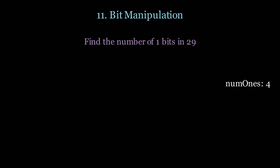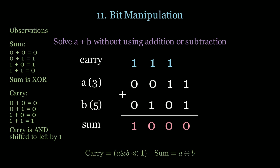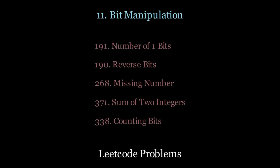For adding A plus B without addition or subtraction, start with the least significant bits: 1+1 is 10 in binary — put 0 for sum and carry 1. Key observations: the carry is A AND B shifted left by one column, and the sum is the XOR operator. For more practice, look at the following LeetCode questions.